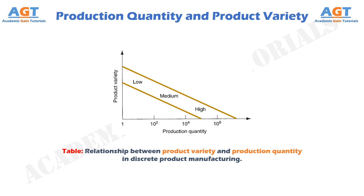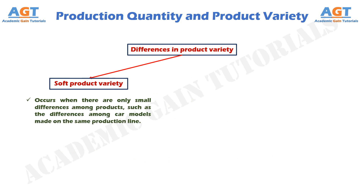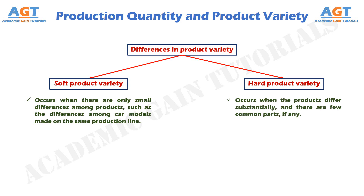Differences between an automobile and an air conditioner are far greater than between an air conditioner and a heat pump. Within each product type, there are differences among specific models, and the extent of these differences may be small or great, as illustrated in the automotive industry. Each U.S. automotive company produces cars with two or three different nameplates in the same assembly plant, although body styles and other design features are virtually the same, while in different plants the company builds heavy trucks. The terms soft and hard are used to describe these differences in product variety. Soft product variety occurs when there are only small differences among products, such as differences among car models made on the same production line — characterized by a high proportion of common parts. Hard product variety occurs when products differ substantially with few or no common parts, as exemplified by the difference between a car and a truck.